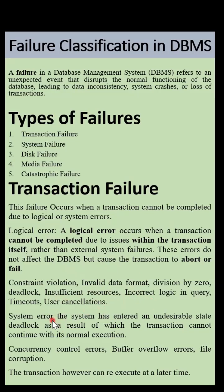System error also comes under transaction failure. If a system encounters an undesirable state, a deadlock occurs as a result of which the transaction cannot continue with its normal execution. Examples include concurrency control errors, buffer overflow errors, and file corruption. When there is a transaction failure, the transaction can re-execute at a later time.